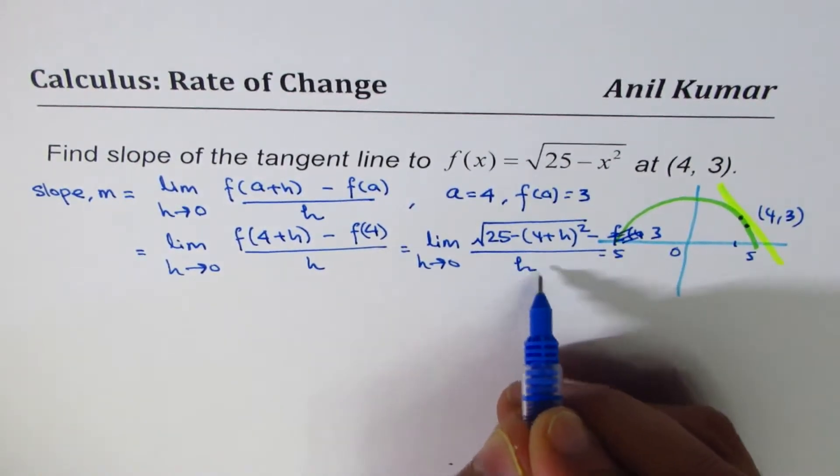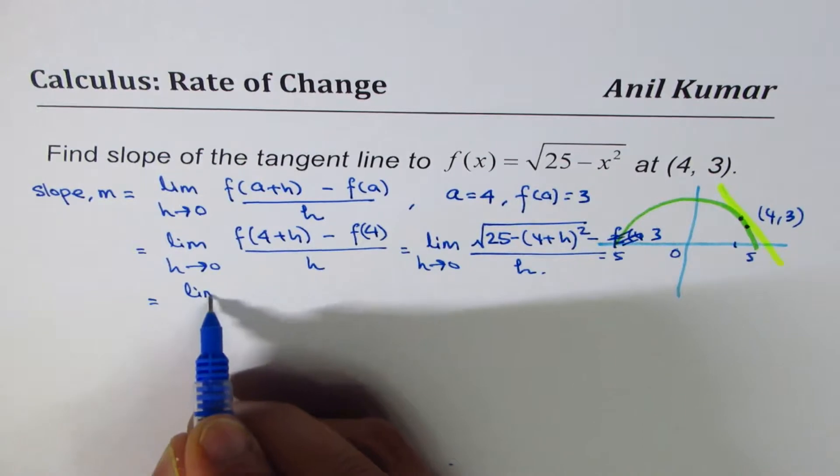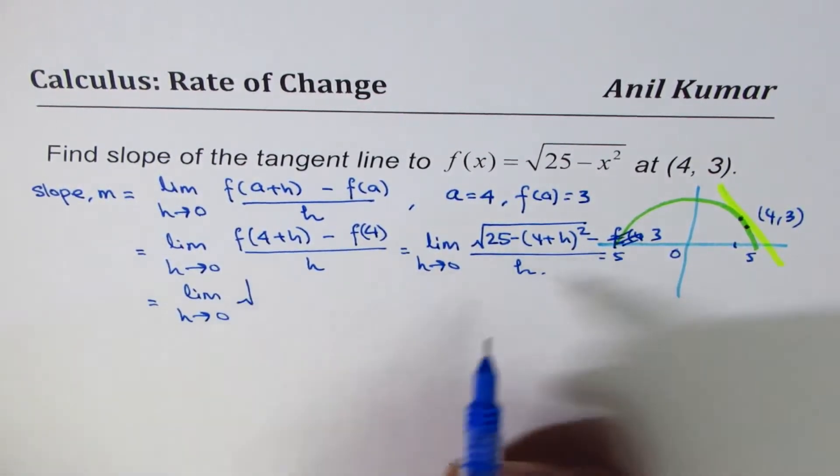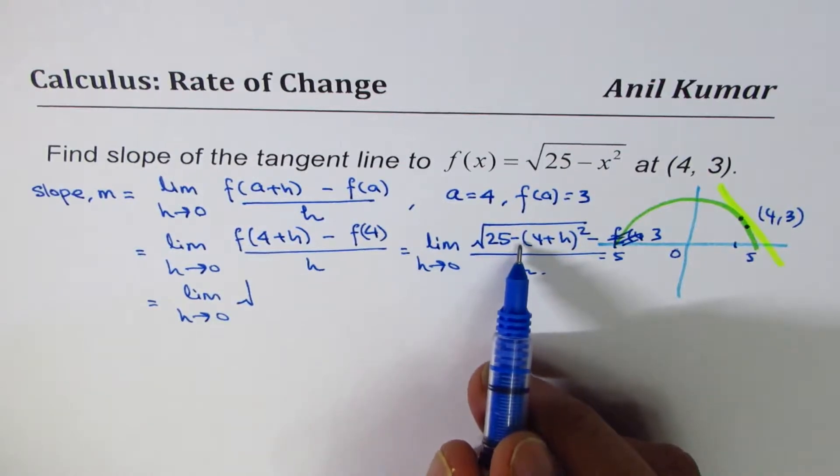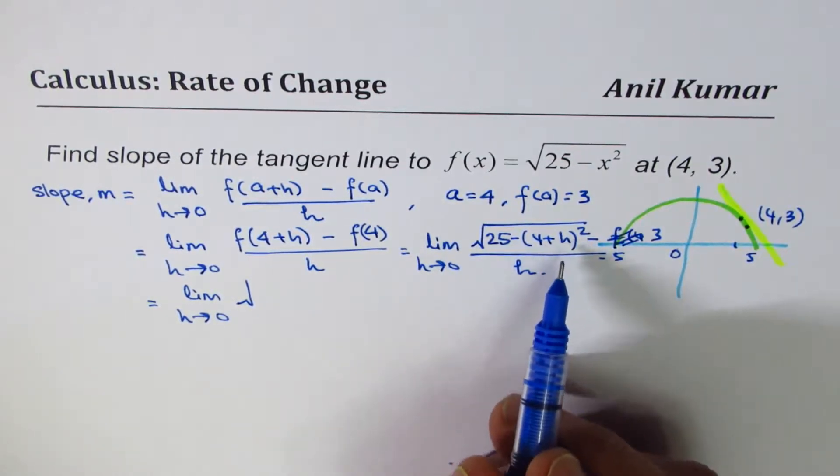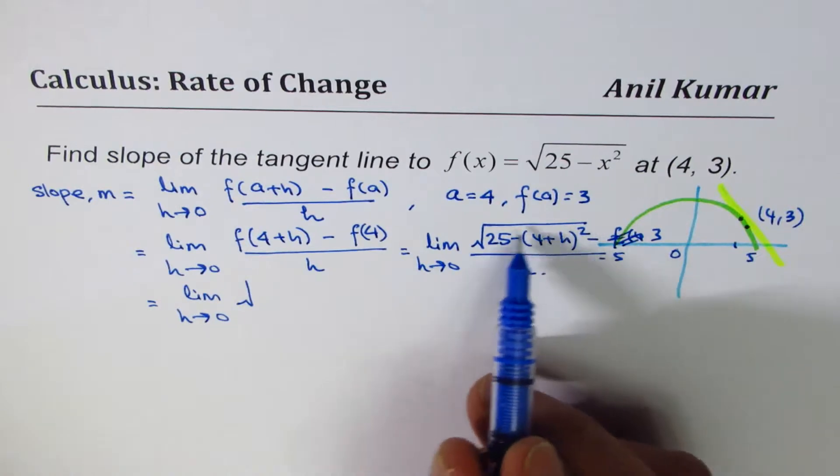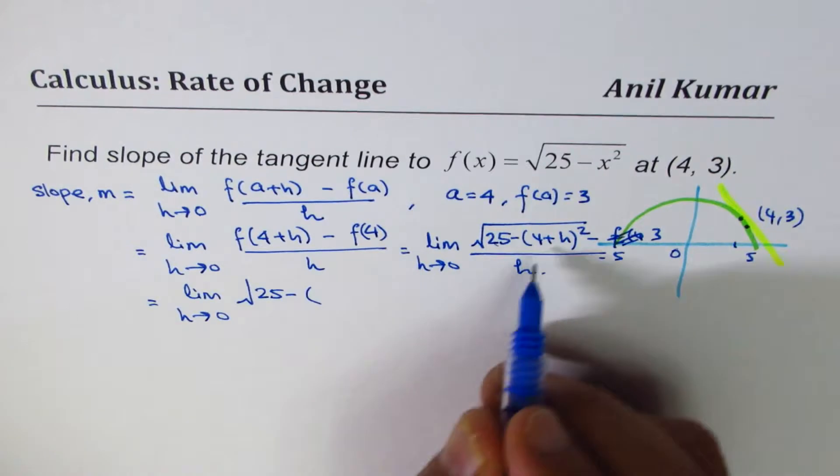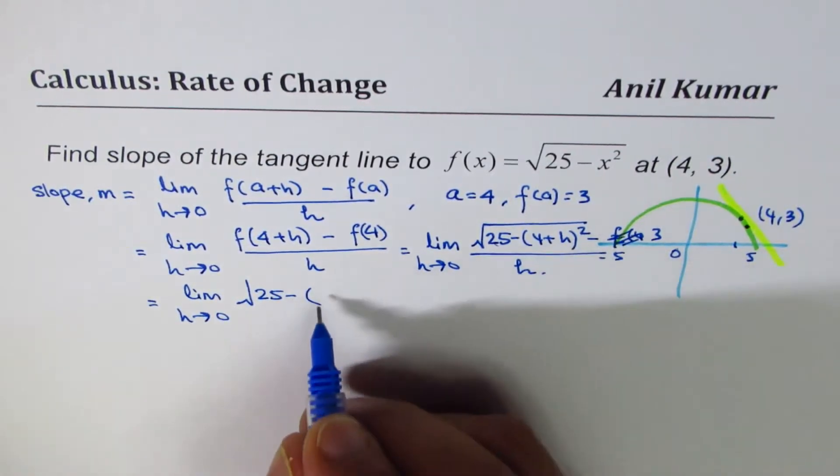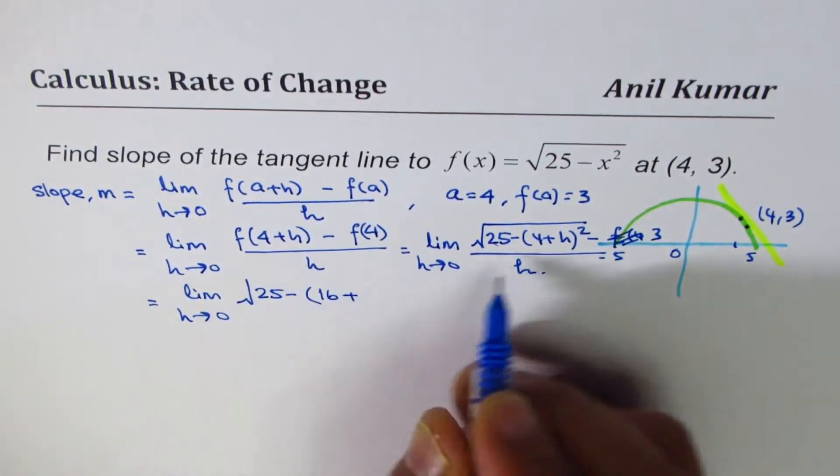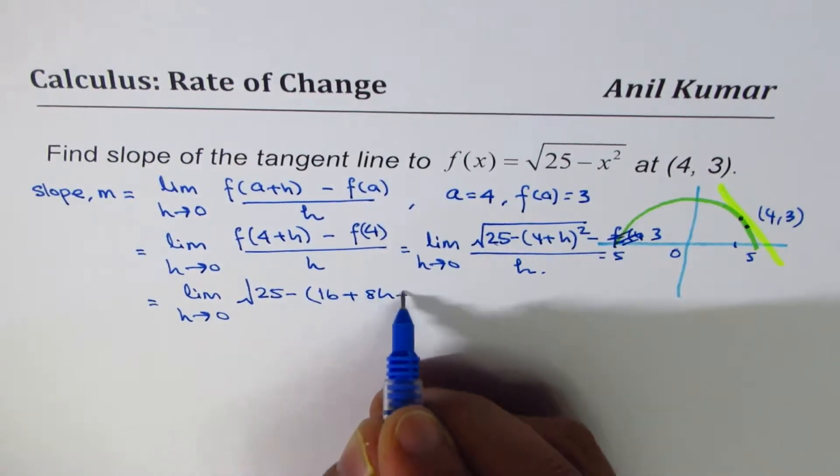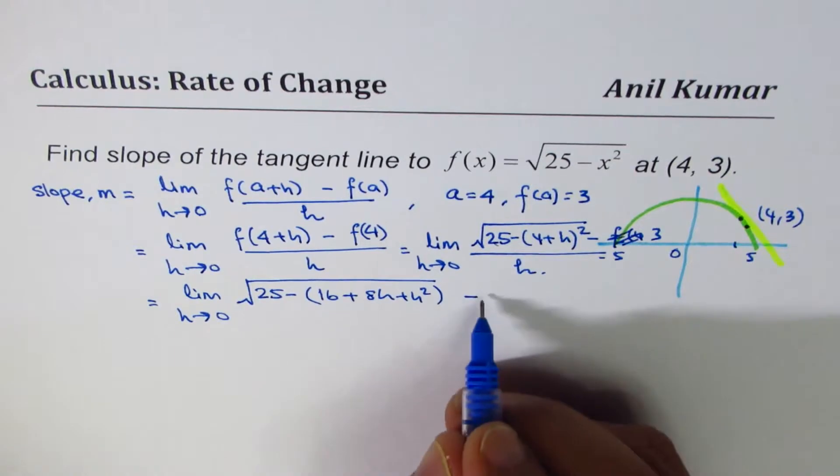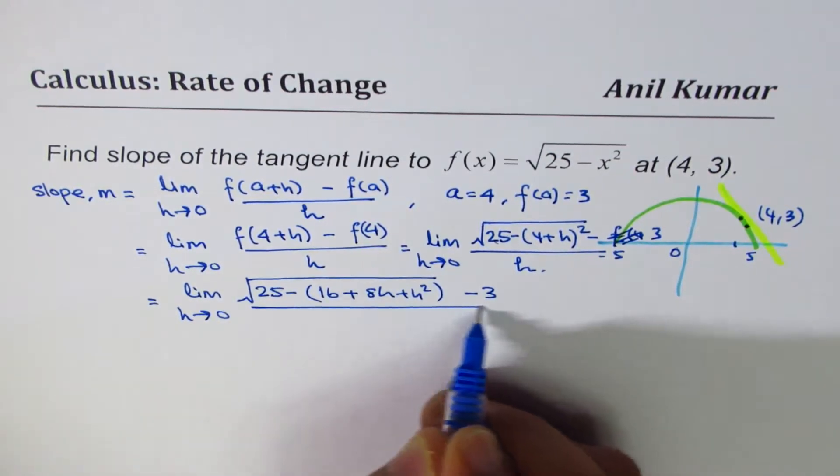So we'll rewrite this: limit, h approaches 0, square root of 25 minus (4+h) whole square. So let me simplify this expression. We have 25 minus (4+h) whole square gives us 16, plus 2ab 8h, plus h square, square root minus 3 over h.